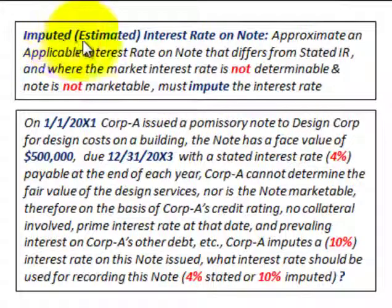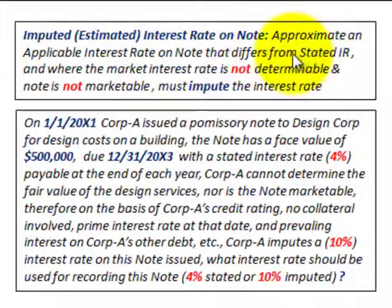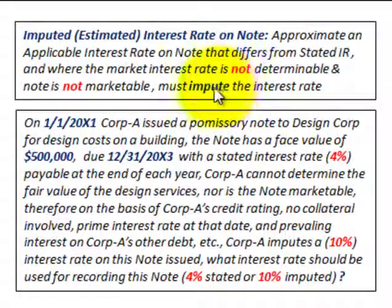What we're going to be looking at here is an imputed or estimated interest rate on a note that's being exchanged. This is where you have to approximate an applicable interest rate on a note that differs from the stated rate of interest, where the market interest rate is not determinable and the note is not marketable. So you must impute — that is, estimate — an interest rate for this note.